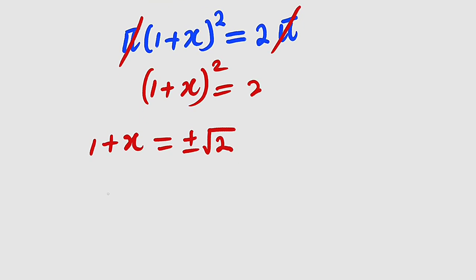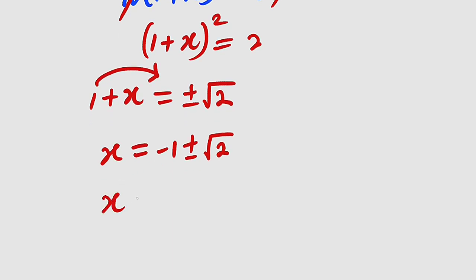We have 1 plus x to the left equal to plus or minus the square root of 2. Since we are looking for x, we have x equal to, we take this to the other side, it becomes negative 1 plus or minus the square root of 2. So x could either be negative 1 plus square root of 2 or x equal to negative 1 minus the square root of 2.